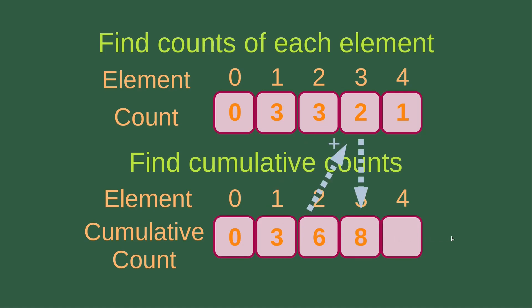For element number 3, the count is 2, so the cumulative count for number 3 is simply equal to 6 plus 2, which gives me 8. And for element 4, the count is 1, and the cumulative count of the previous number is 8. So I just add 8 by 1 to get 9, being the cumulative count of element number 4.